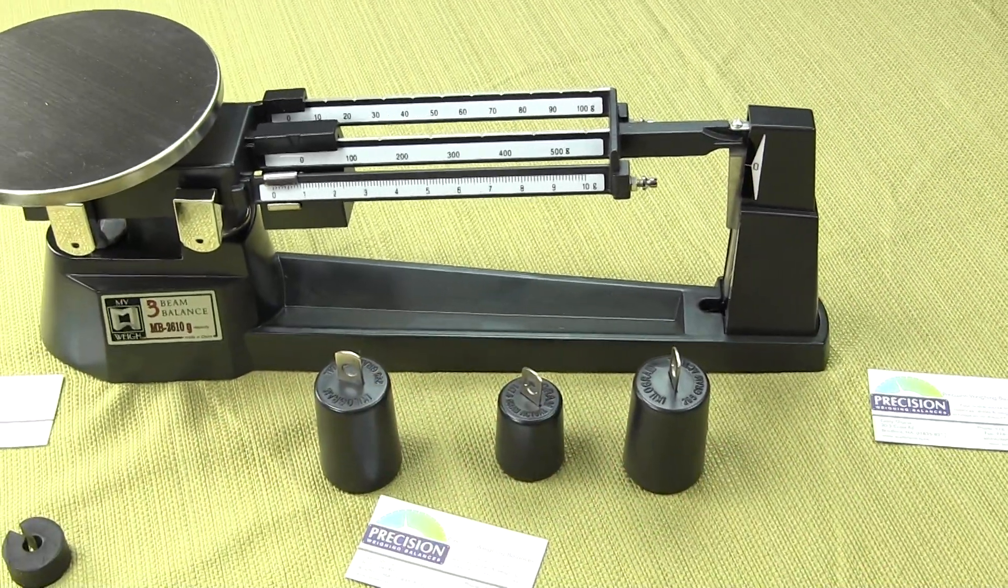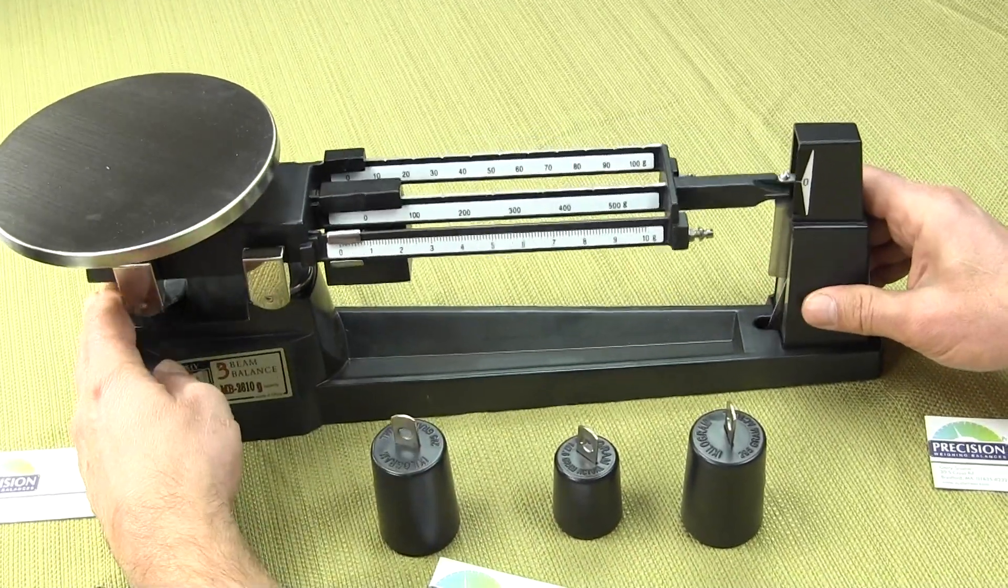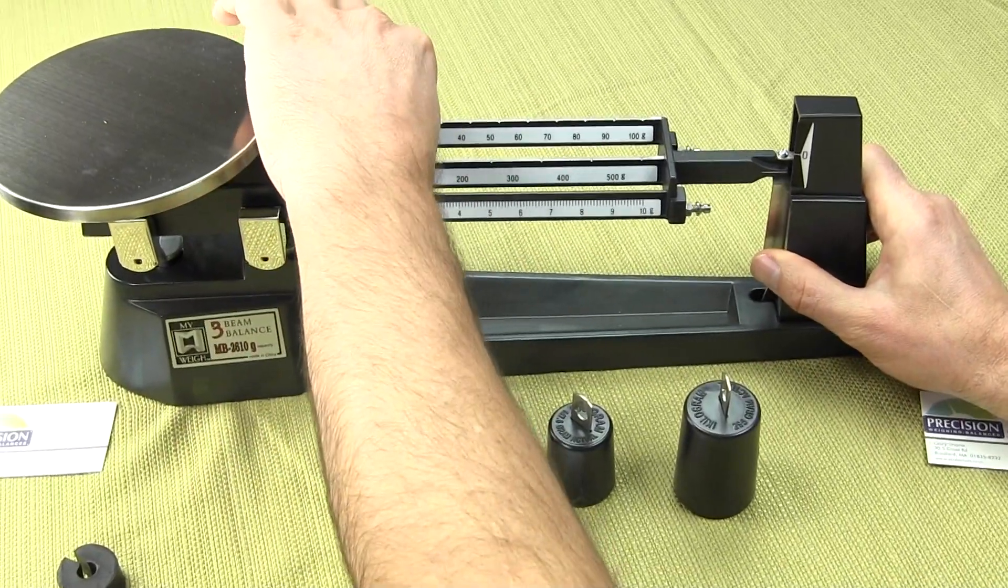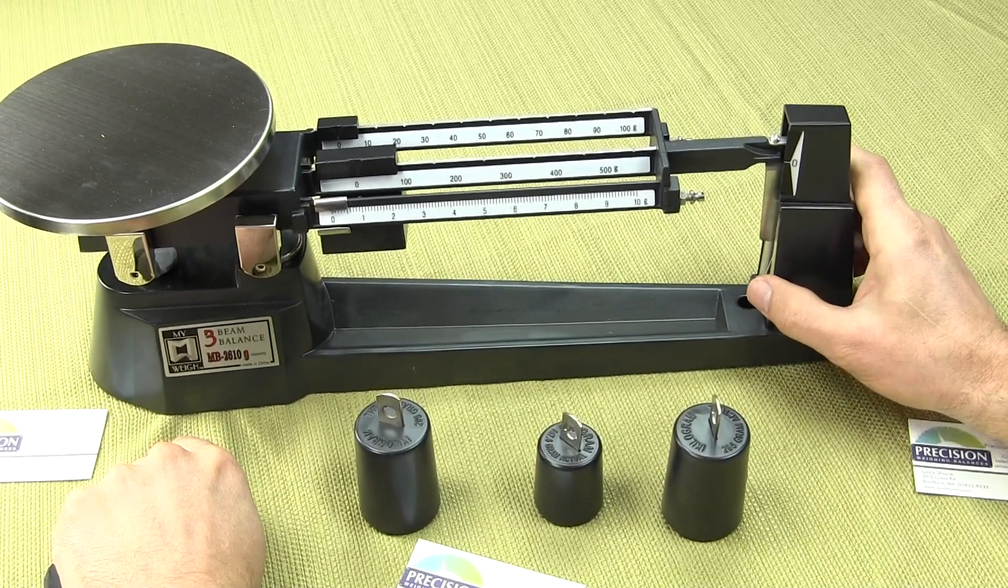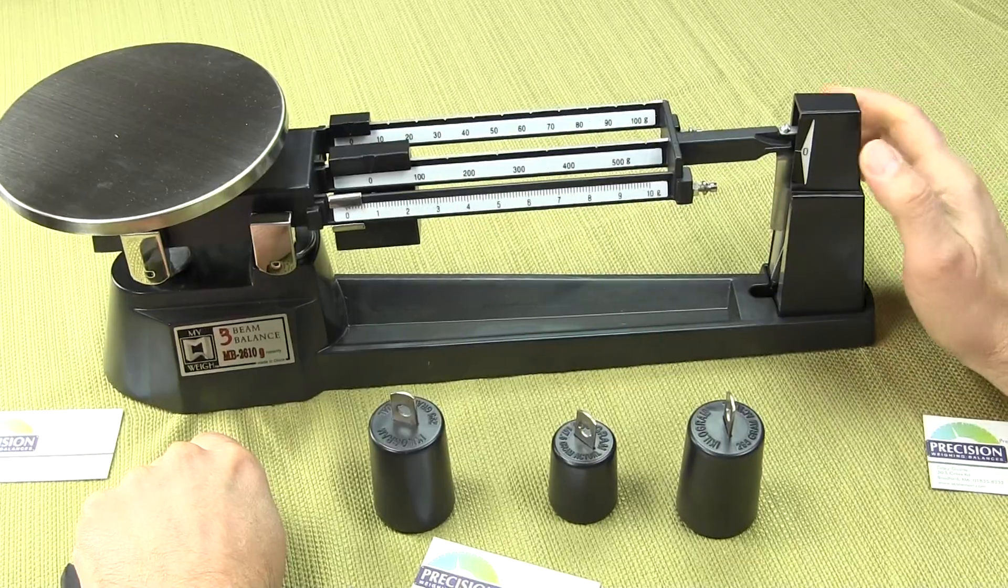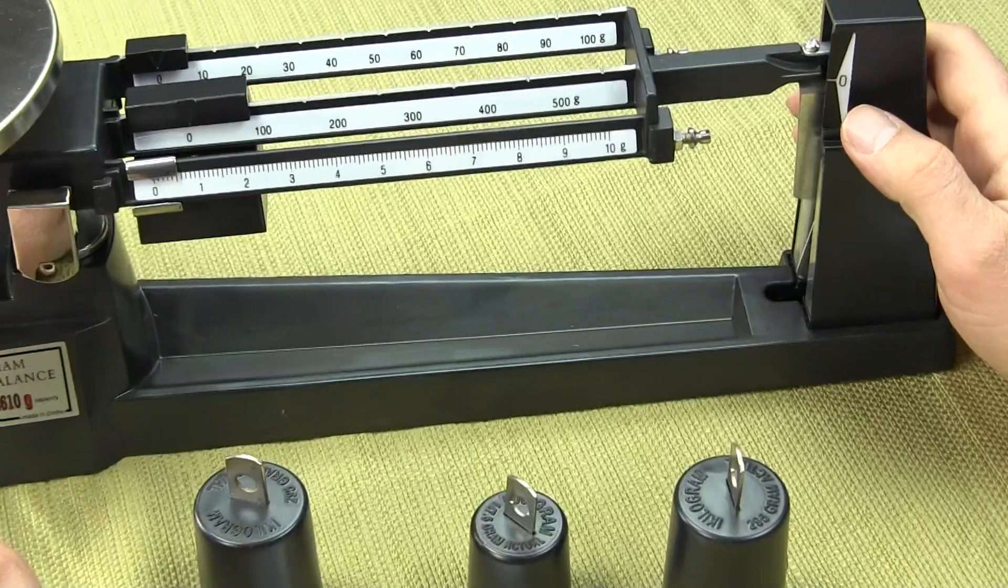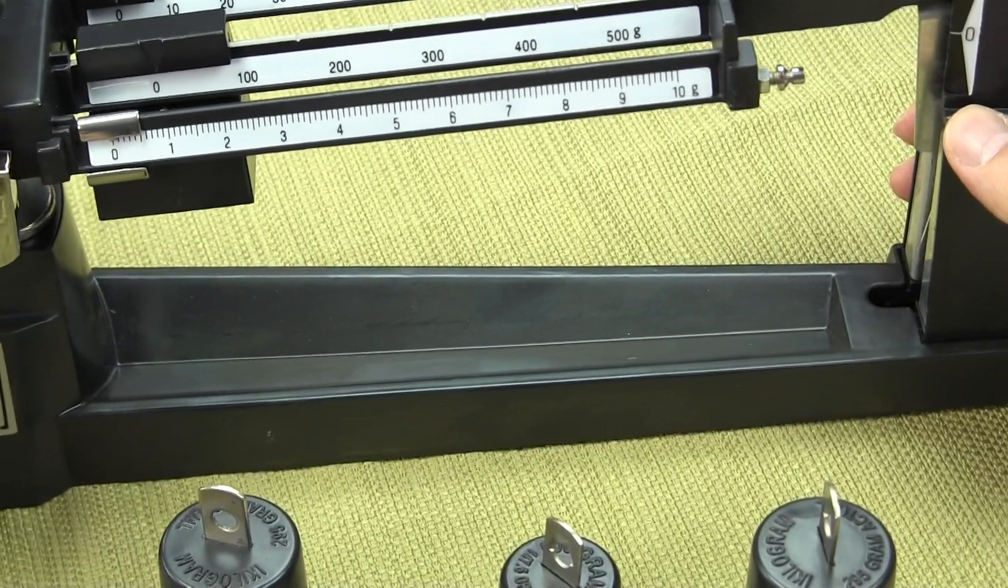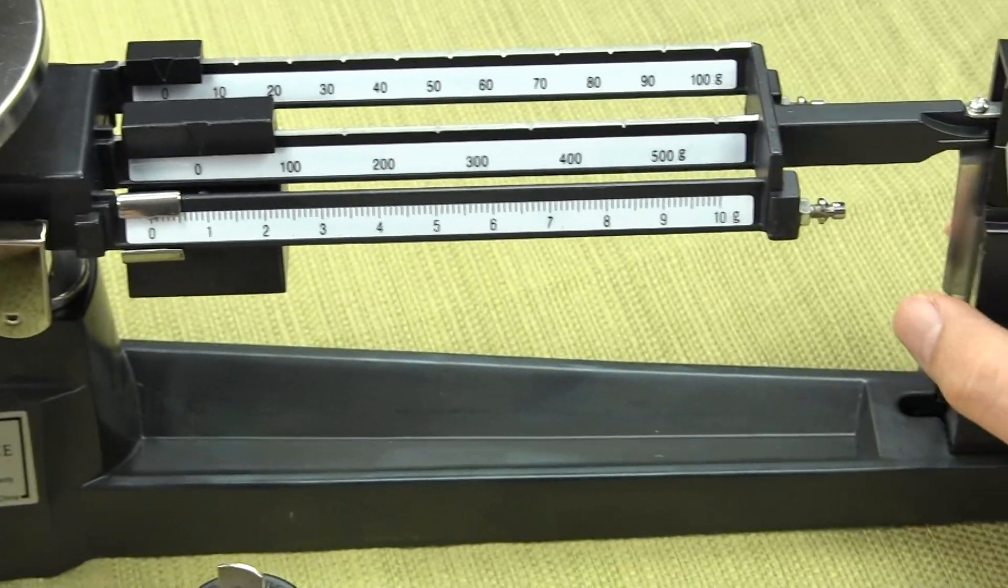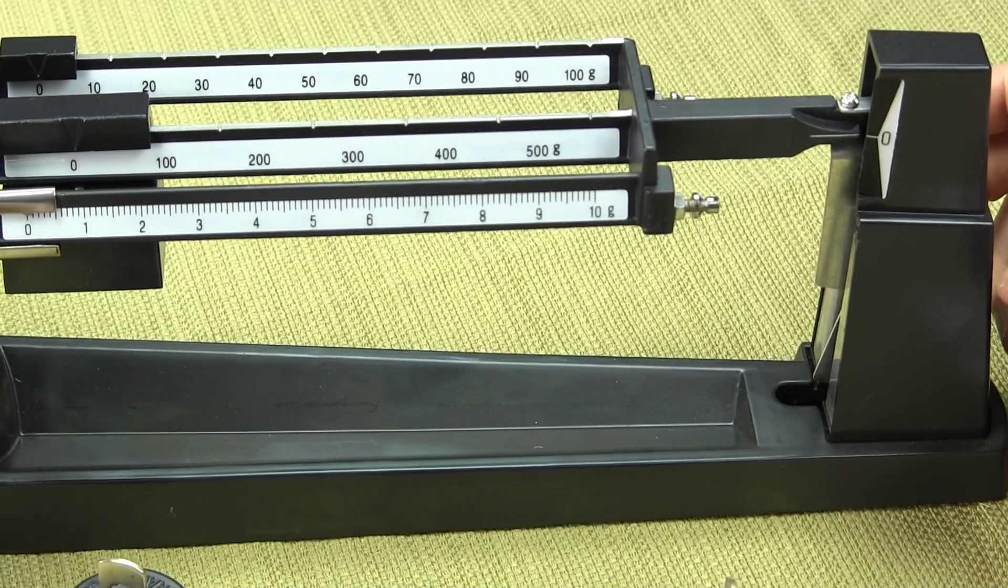The first thing we want to do is adjust the three beam balance so that it's level. We need to make sure that all the poises are all the way back to the left. As the balance oscillates up and down, we're looking here on the right hand side where the hashtag is, and it's a little high right now. We're going to use this curl knob. If we curl it in, the beam will come down. There we have it, it's level.